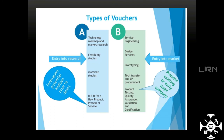Voucher B is designed to help you develop a product within a business model. Under Voucher B, the cost is covered 50% by knowledge partners, up to a maximum of 5 lakhs. For example, if your business model costs 10 lakhs, you receive a grant of 5 lakhs.